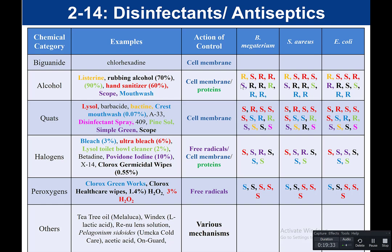Hand sanitizer at 60% is in red. Scope mouthwash depends on the formulation — different mouthwashes have different active ingredients. Crest mouthwash is not in the alcohol category; it's actually in the quaternary ammonium ion category. In the ones tested, Scope is in the alcohol category. The way alcohols work is by two main methods: they disrupt the cell membrane and they denature proteins, and that's how they control microbial growth.